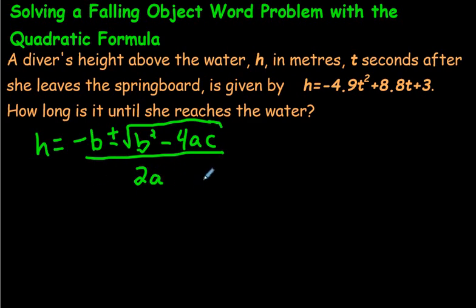That is the quick little expression how we could memorize this really quickly. And let's now figure out: this is the a value right here, the 8.8 is the b value, and 3 is the c value.